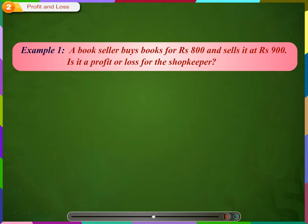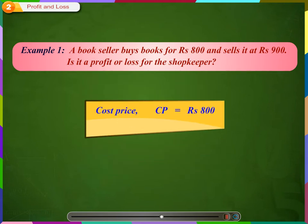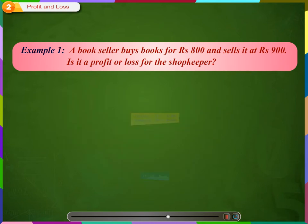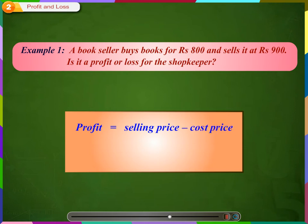Let us solve a few problems to get a better understanding of the topic. A bookseller buys books for Rs. 800 and sells it at Rs. 900. Is it a profit or loss for the shopkeeper? Here, the cost price is Rs. 800 and selling price is Rs. 900. Since the selling price is greater than the cost price, we can say it is a profit. And how much is the profit? Profit is equal to the selling price minus the cost price, i.e. 900 minus 800, which equals 100. A profit of Rs. 100 means that the article was sold at Rs. 100 more than the cost price of the article.